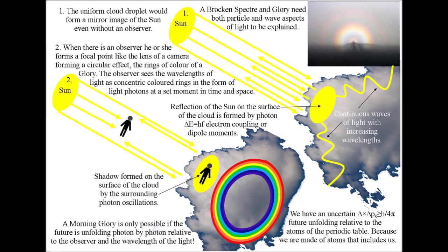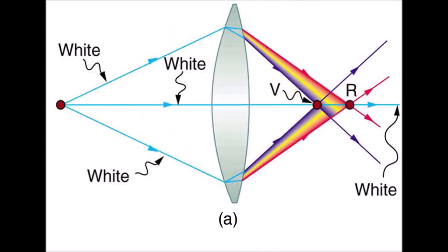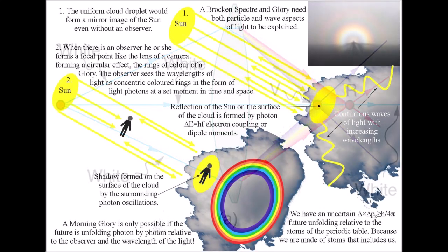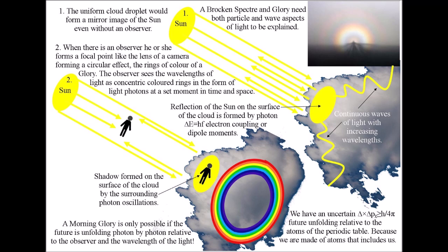This would make the glory — the circular rings of colour — a secondary effect. When there is an observer, he or she forms a focal point, like the lens of a cheap telescope forming rings of colour. Because the fog bank was partly transparent, the light waves are continuously travelling through the fog. What the observer does is see the wavelengths of the light as concentric coloured rings, in the form of light photons, at a set moment in time.